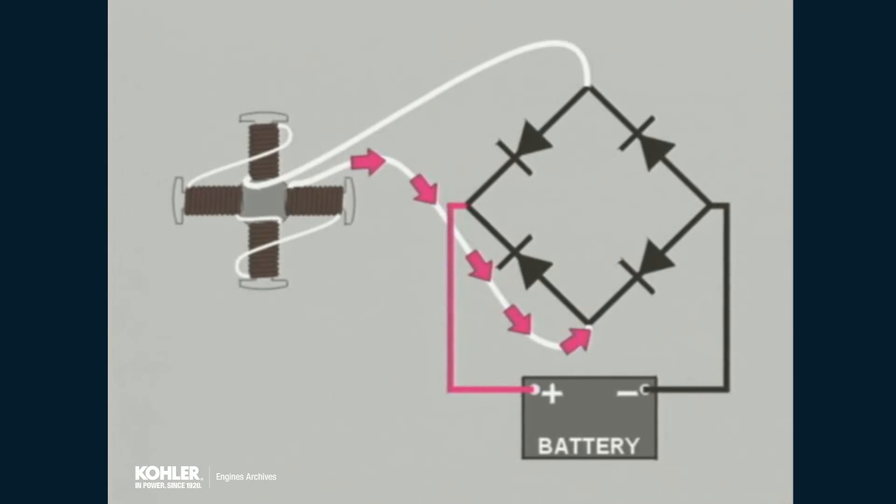When the induced current reverses and a negative pulse is exposed to the bridge, it enters the opposite side of the bridge. Here, the same blocking to ground with forward flow to the battery occurs. The circuit is completed through the bridge-ground connection to the opposite end of the stator.